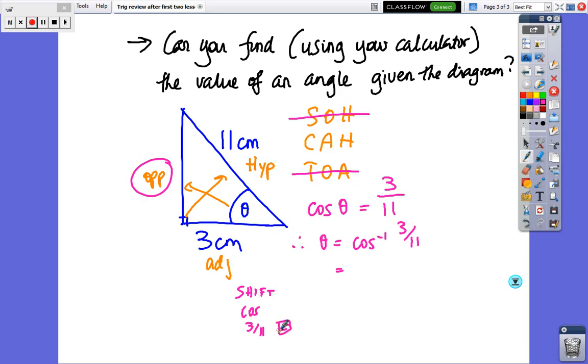So when you do that, ok, I'm going to clear my calculator, so shift cos 3 over 11, press equals, and the answer is 74.17 degrees, so it's about 74 degrees to the whole number.